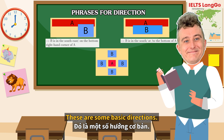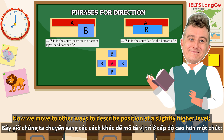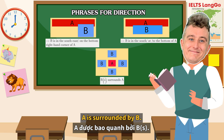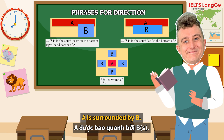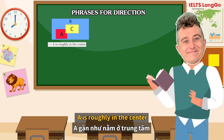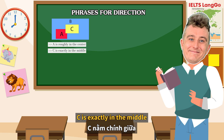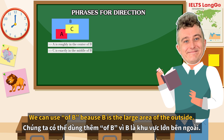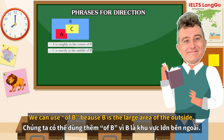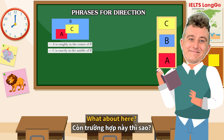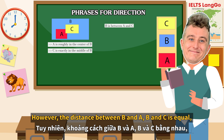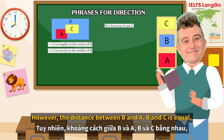These are some basic positions. Now we can move to other ways to describe position at a slightly higher level. We could say B surrounds A. Here, A is roughly in the centre. C is exactly in the middle. We can use 'of B' because B is the large area on the outside. What about here? B is between A and C. However, the distance between B and A, and B and C is equal.